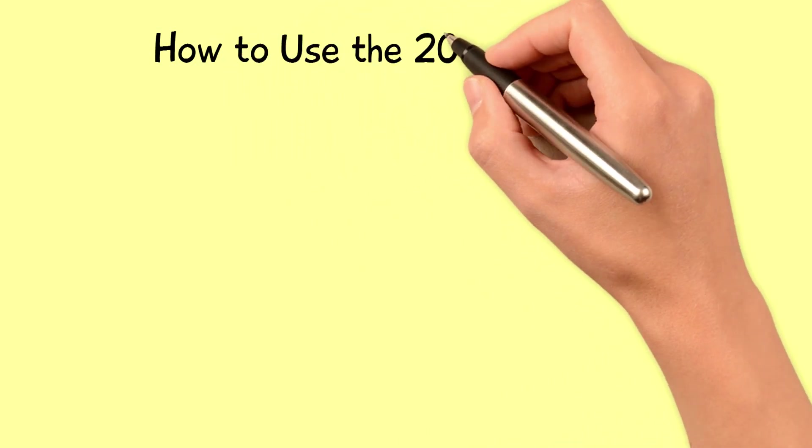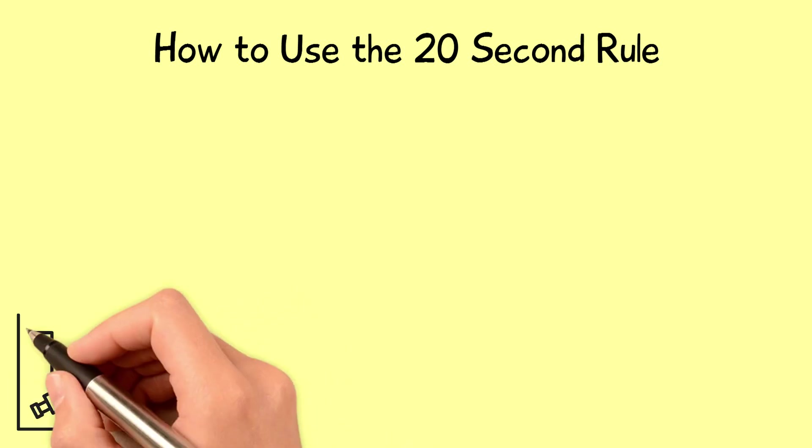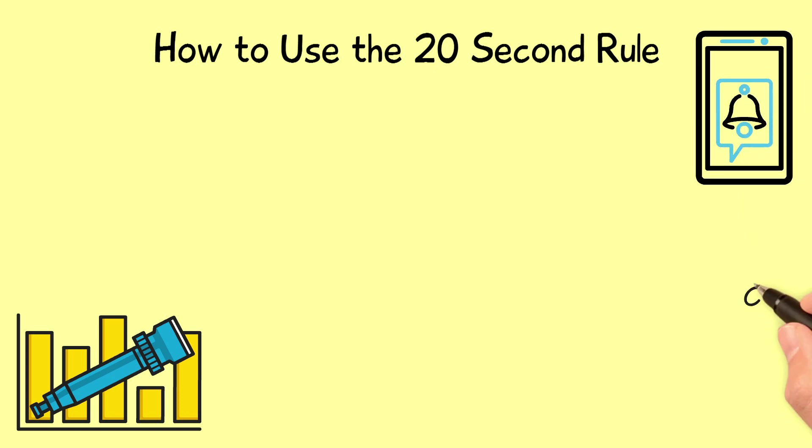How to use the 20 second rule? Step 1: Notice what distractions get in the way. While focusing on your habit, do you really need to know the instant each email arrives? Do you keep your phone on your desk while you try to focus?